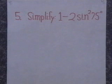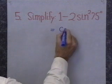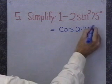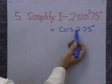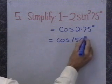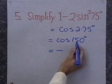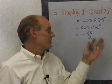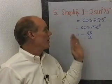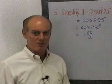Simplify 1 - 2sin²(75°). This looks like the expanded form of cos of twice 75°, because the formula cos(2a) = 1 - 2sin²a means here a = 75°. So this is cos(2 × 75°) = cos(150°). Now, 150° terminates in quadrant 2, so cosine is negative. The reference angle back to the x-axis is 30°. cos(30°) = √3/2, so the answer is -√3/2. It's negative because 150° terminates in quadrant 2.